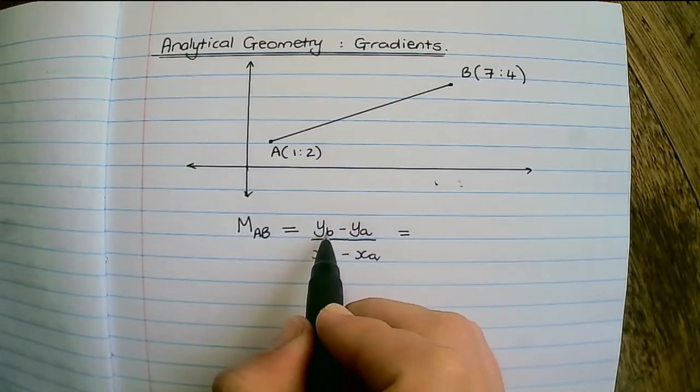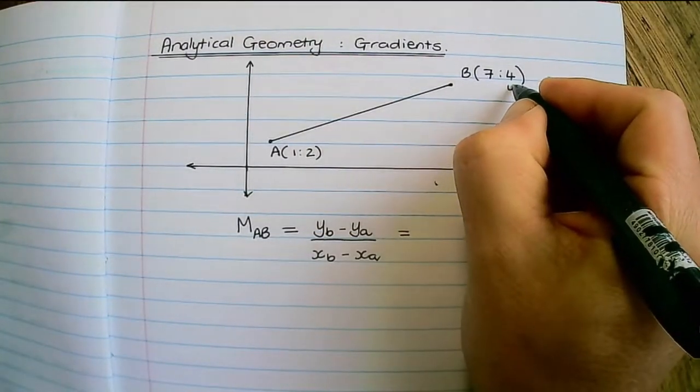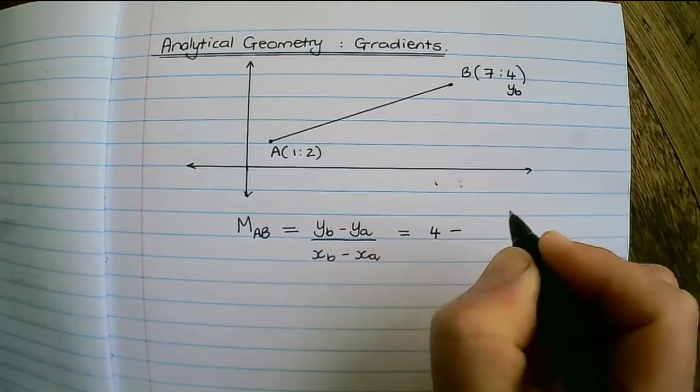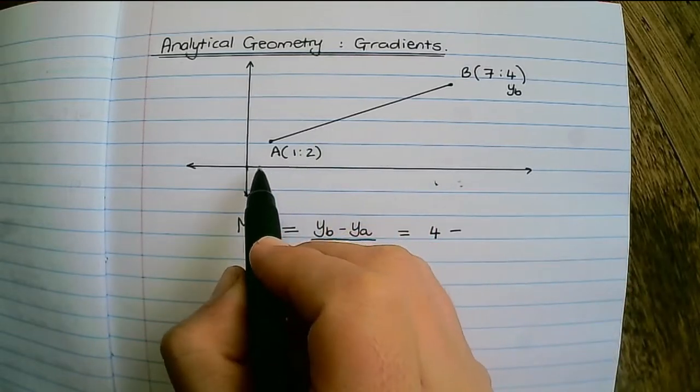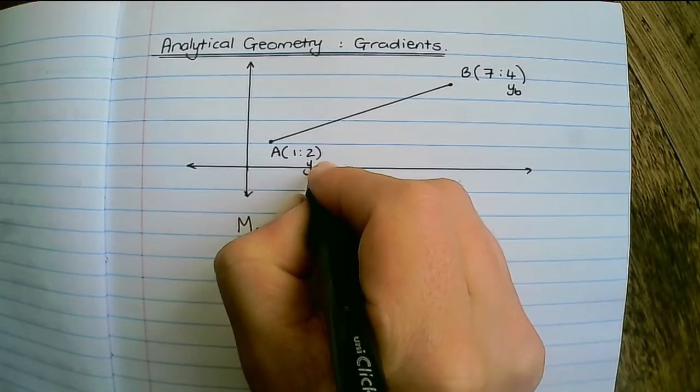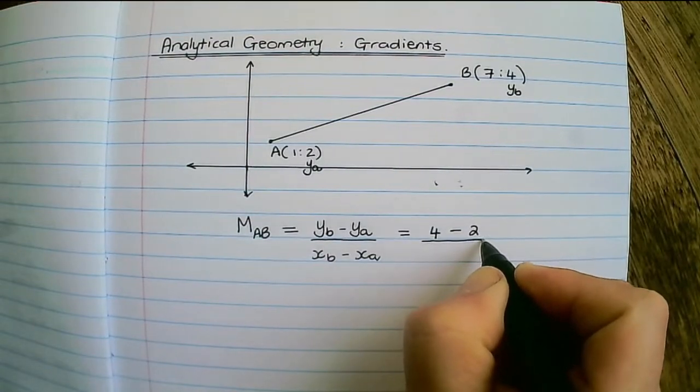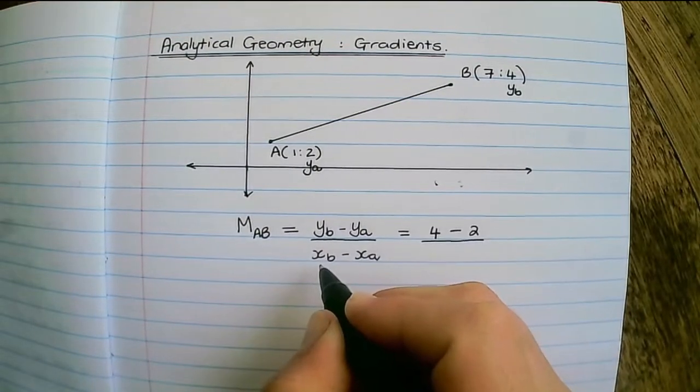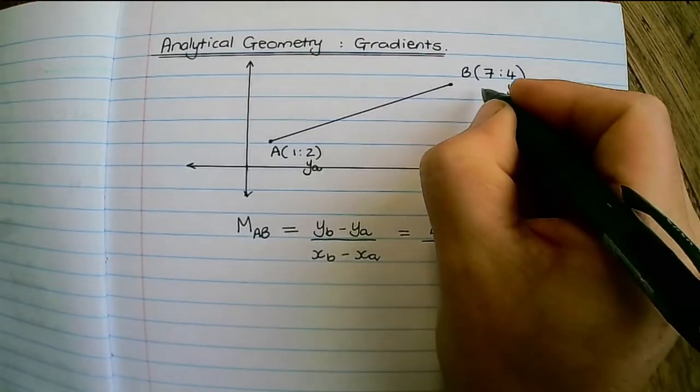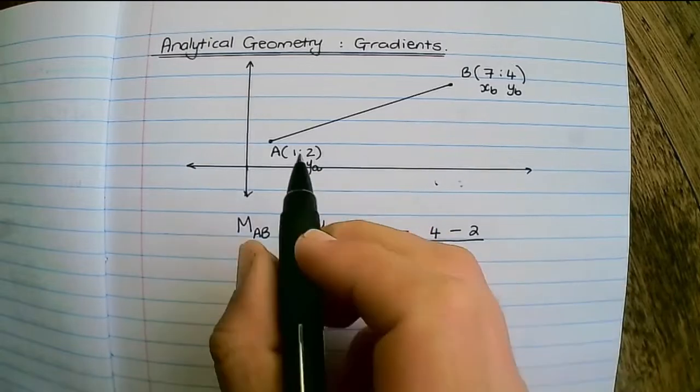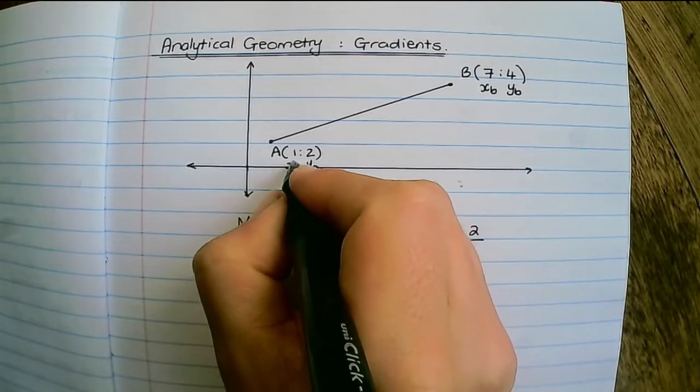The y value in coordinate B, so the y of B is equal to 4, and we subtract the y value in coordinate A, so the y value is 2, over the x coordinate of B which is 7 minus the x coordinate of A